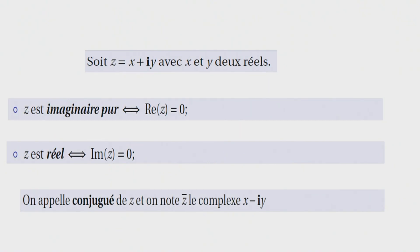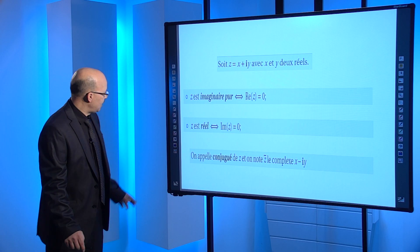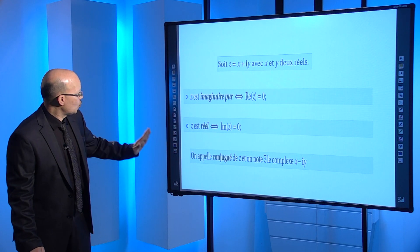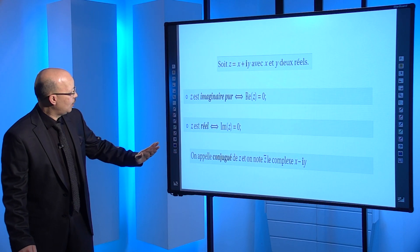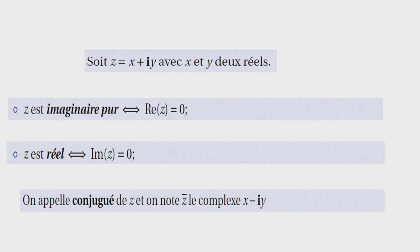On appelle conjugué de z, et on note z̄, le complexe x-iy. C'est-à-dire z et z̄ ont même partie réelle, et la partie imaginaire de z̄ est l'opposé de la partie imaginaire de z. Le conjugué de z est noté z̄ = x-iy.